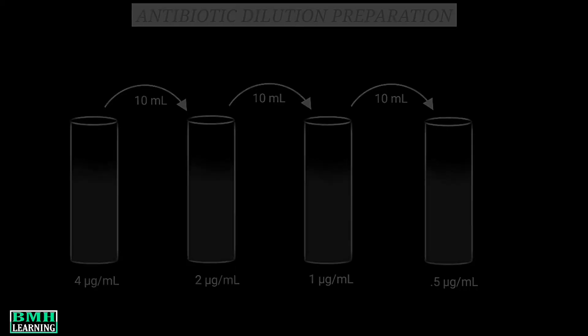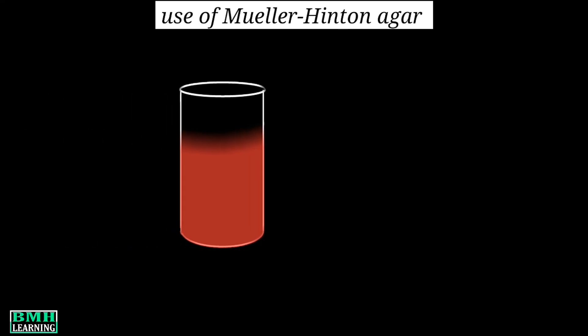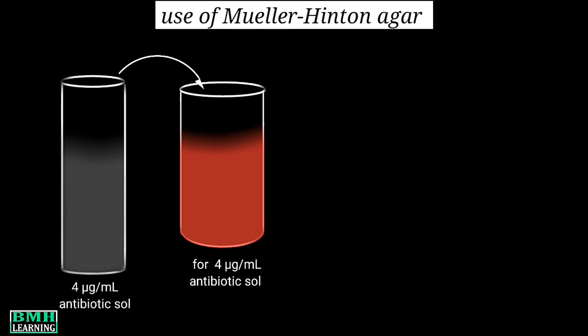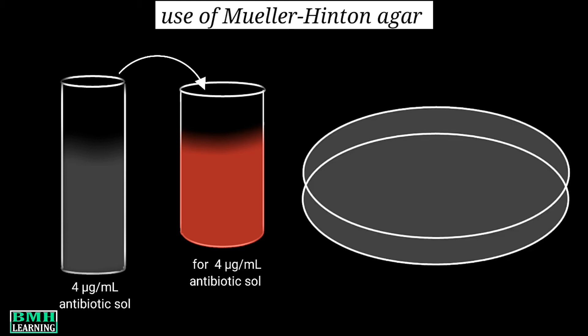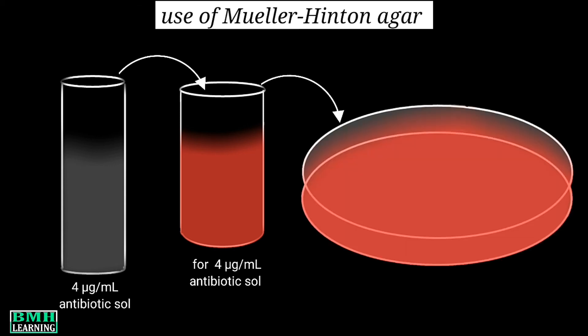Now it is time to use Mueller-Hinton Agar. For each concentration — for example, 4 micrograms per ml — we add the corresponding antibiotic solution into the melted Mueller-Hinton Agar. The agar with antibiotic is then poured into a Petri dish. This process is repeated for each serially diluted concentration. After completing all plates, we allow them to solidify.